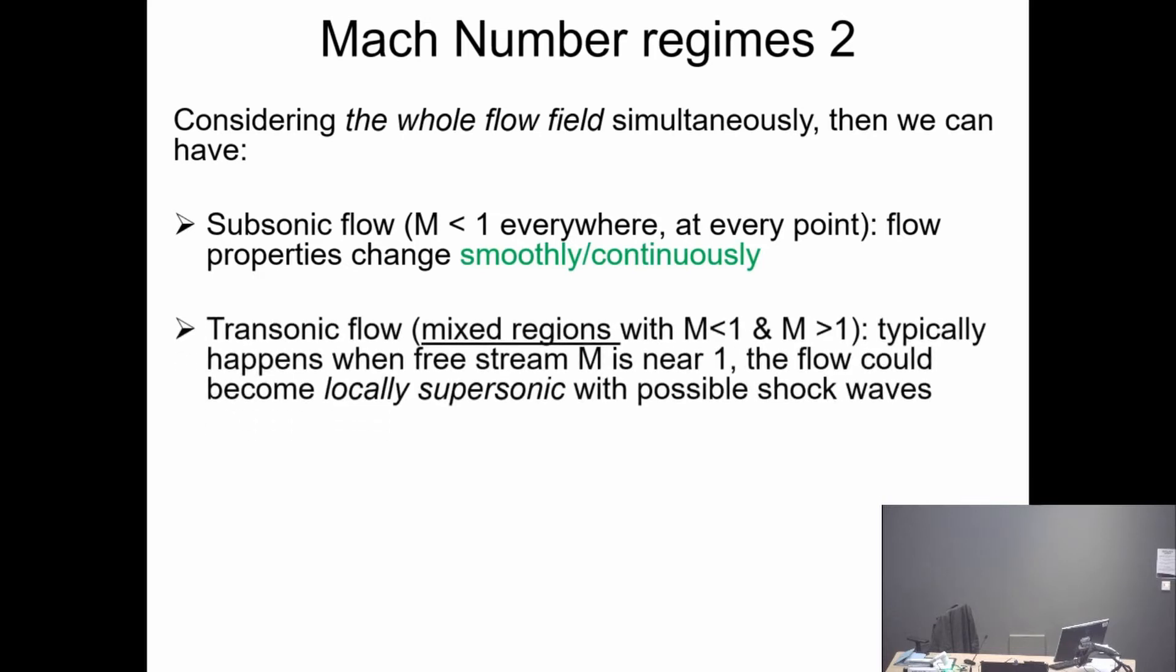However, we can also get into something called the transonic region. That's a mixed region with subsonic and some local supersonic flow. The flow has typically two regions with one subsonic M less than 1 and one supersonic M greater than 1. If you think about your coursework, we ask you to run a calculation for Mach number close to 1, between 0.7 to 1.0, I would say.